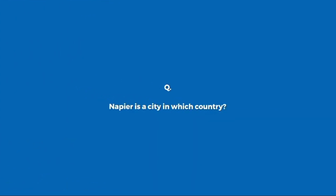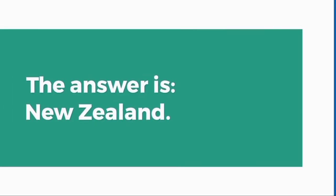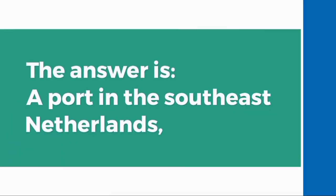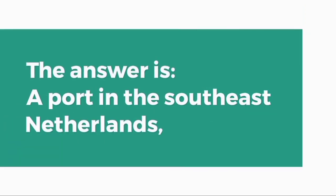Napier is a city in which country? New Zealand. What is the Hook of Holland? A port in the southeast Netherlands.